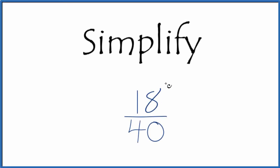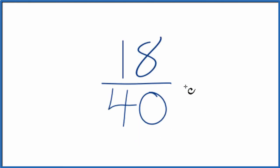If you're asked how to simplify the fraction 18 fortieths, here's how you do it. What we want to do is find another fraction that's equivalent to 18 over 40. It has the same value, just in its simplest form.